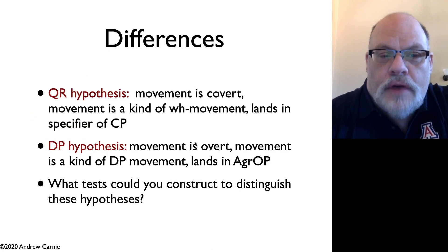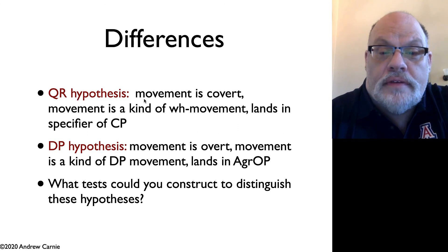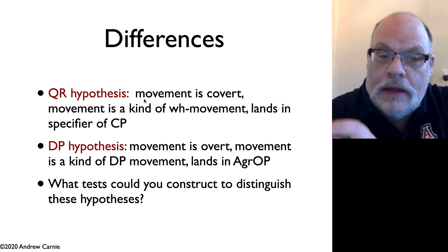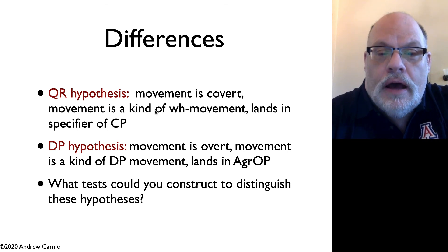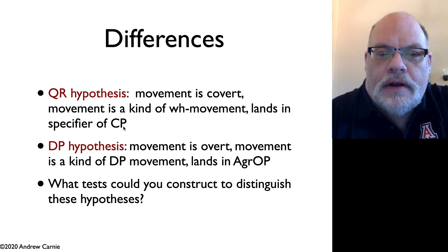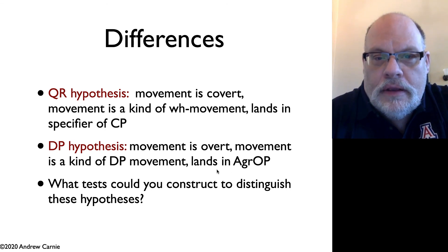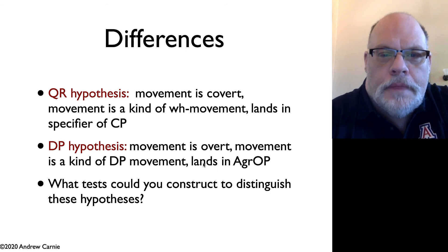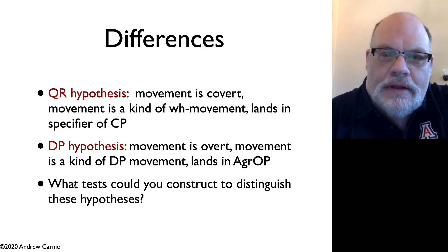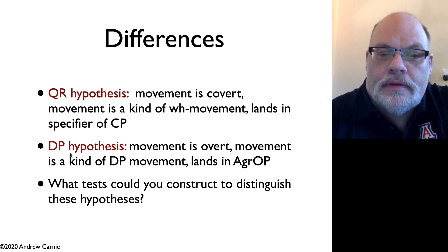What are the differences between the two hypotheses? The quantifier-raising hypothesis says that movement is covert — it happens between spell-out and LF — and it's a kind of WH movement or A-bar movement, and the relevant DP lands in the specifier of CP. Hornstein's DP hypothesis says the movement is overt, it's a kind of DP movement, and it lands in AgrO — a movement independently proposed to get accusative case on objects. What kind of tests would you construct to distinguish these two hypotheses? It's worth considering how we could distinguish the QR hypothesis from the DP hypothesis.